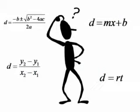I'll need a formula, but which one? D equals the opposite of B plus or minus the square root of B squared minus 4AC over 2A. D equals MX plus B. D equals Y2 minus Y1 over X2 minus X1. D equals RT.